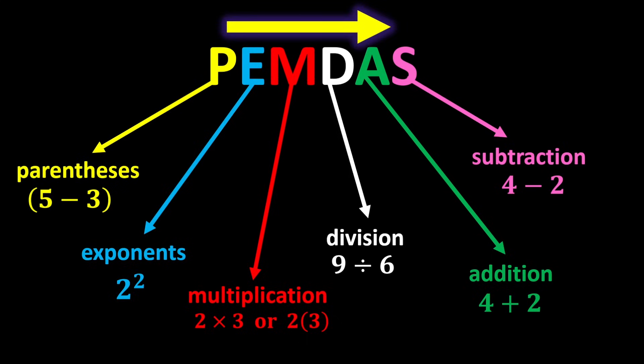Multiplication and division have equal priority, so whenever both appear in an expression, move from left to right and perform whichever you reach first. This rule also applies to addition and subtraction. Based on these explanations, let's solve an example to better understand PEMDAS.